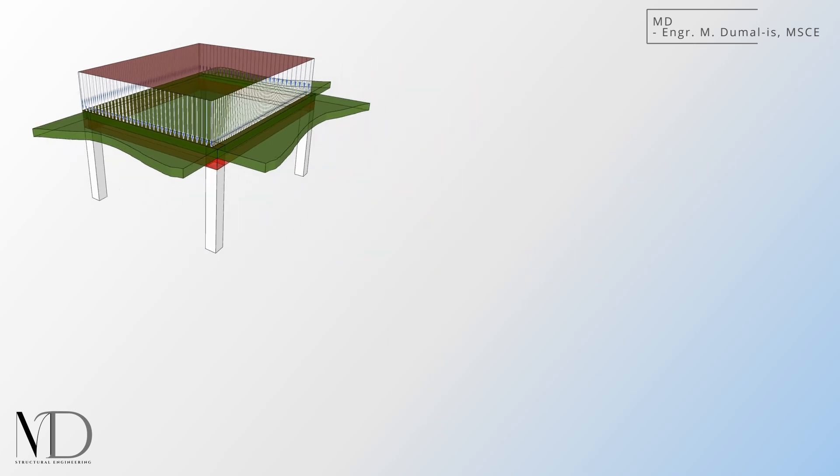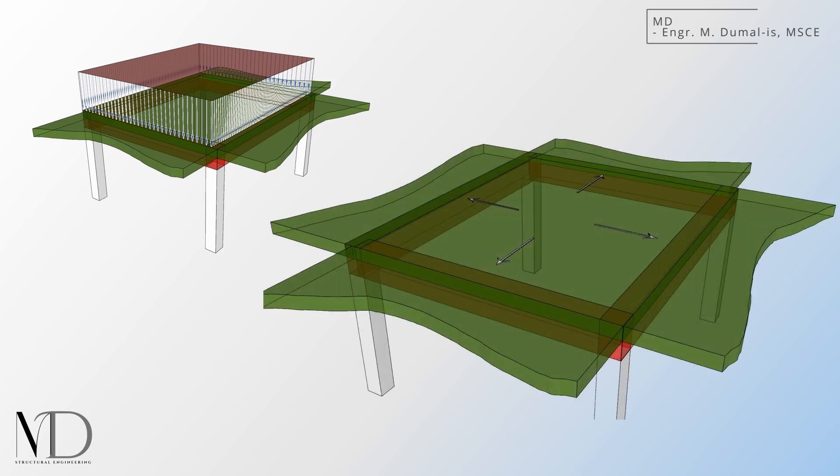Let's start with the basics. A slab doesn't just carry its load, it passes it on to the beams below. Each part of the slab sends its weight, along with any imposed loads, directly to its supporting beams. But how exactly does this transfer happen?